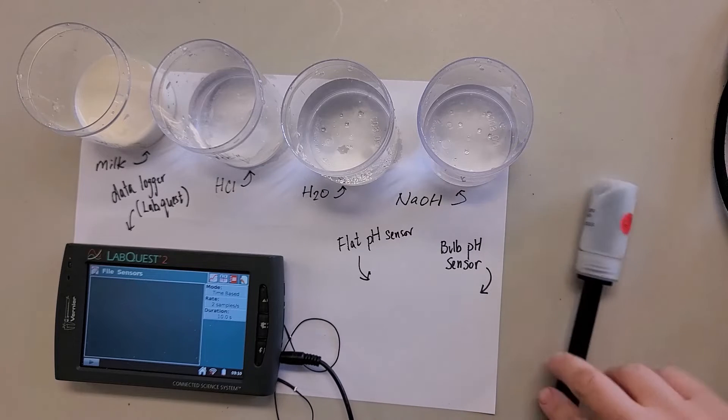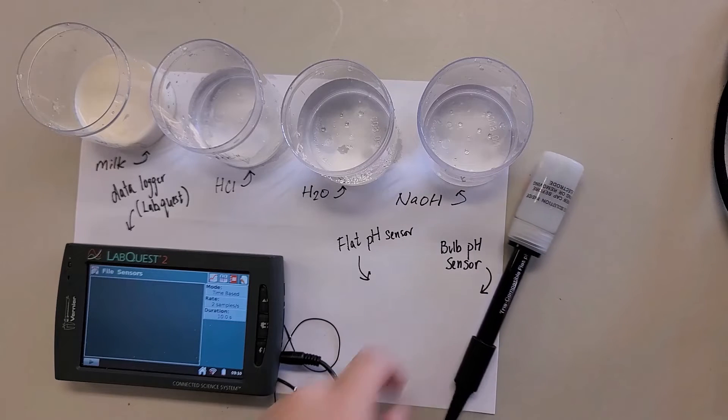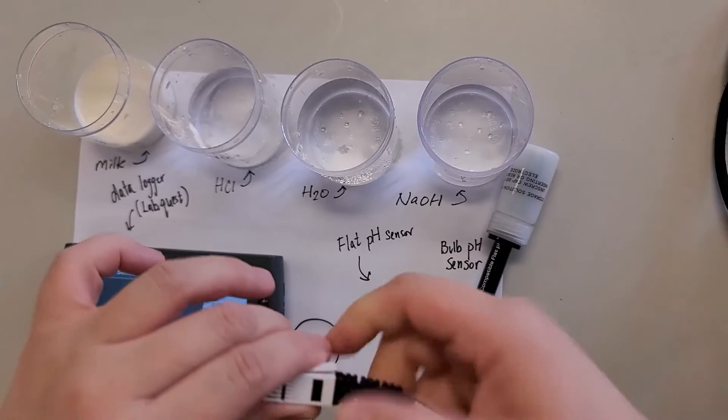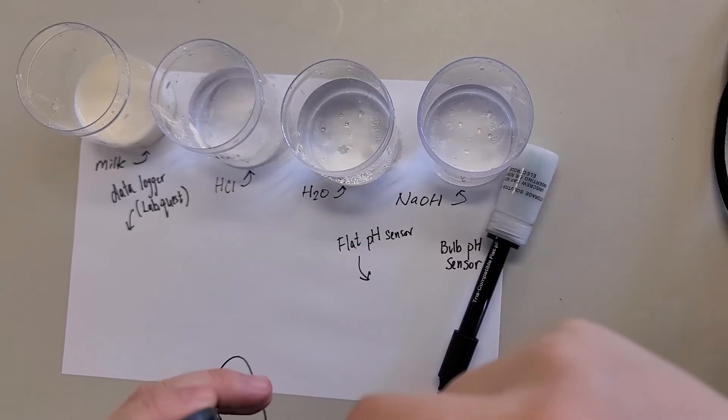So here, what we're going to do is try the milk first. We will use the flat pH sensor. Press this one before you put it into the channel, channel one.